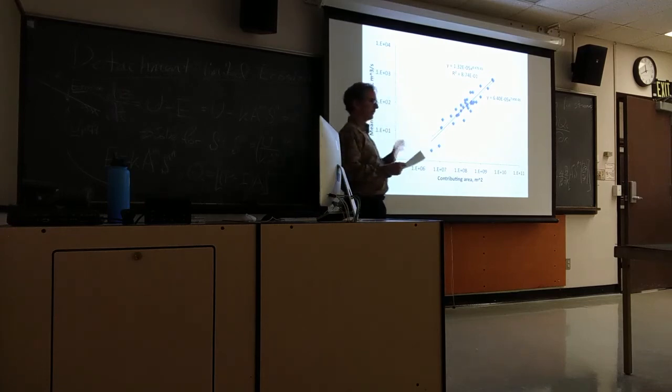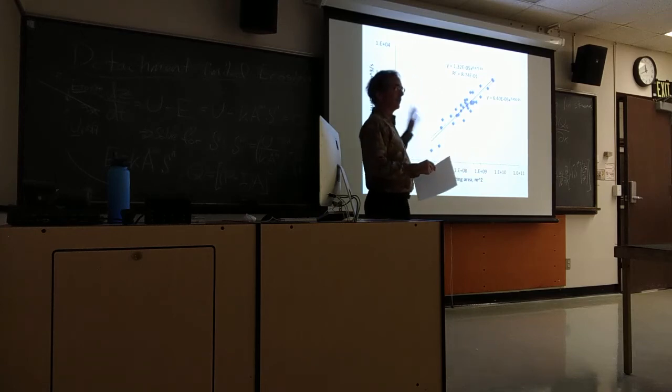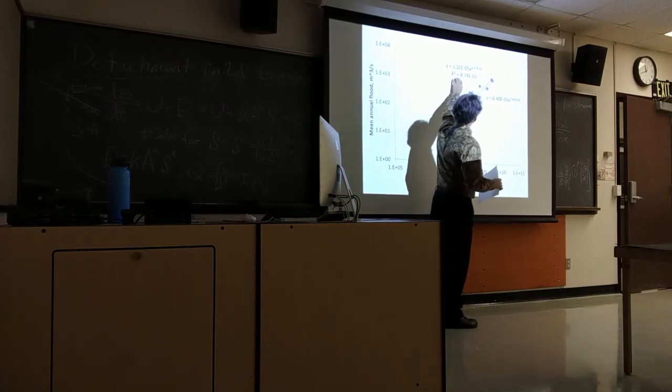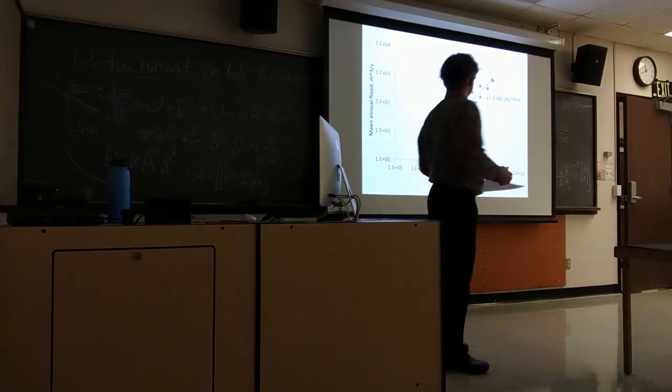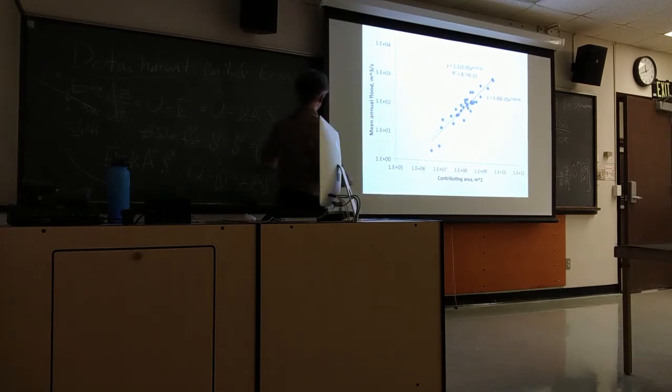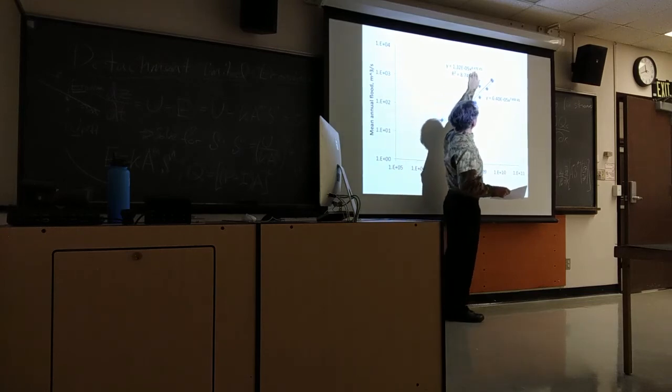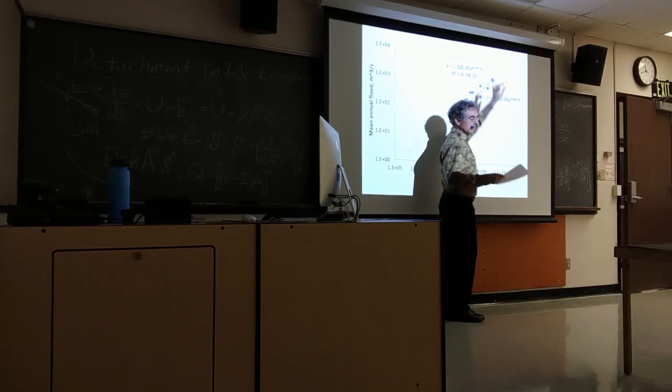And so, I plot that up versus the contributing area at each gauge. And put it on log-log axes, so it will make a power law fit nice. And stick a power law to it, and the solid line then is this equation up here. What does that say? That says that that constant, that C, that exponent C there, is 0.85. 0.47 times 10 to the minus 1, 0.85.